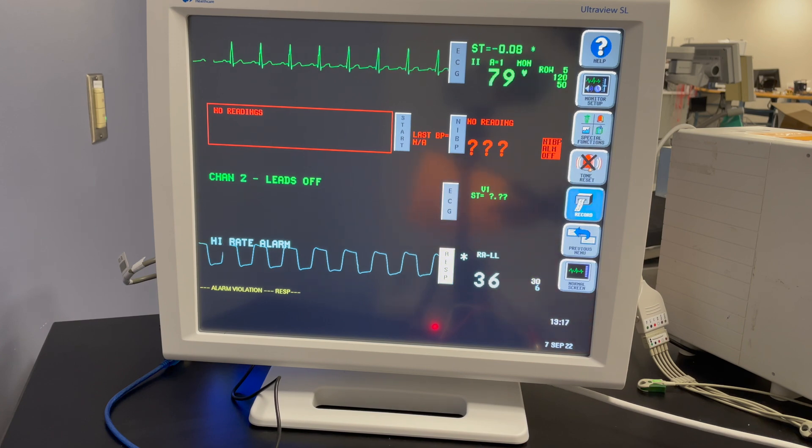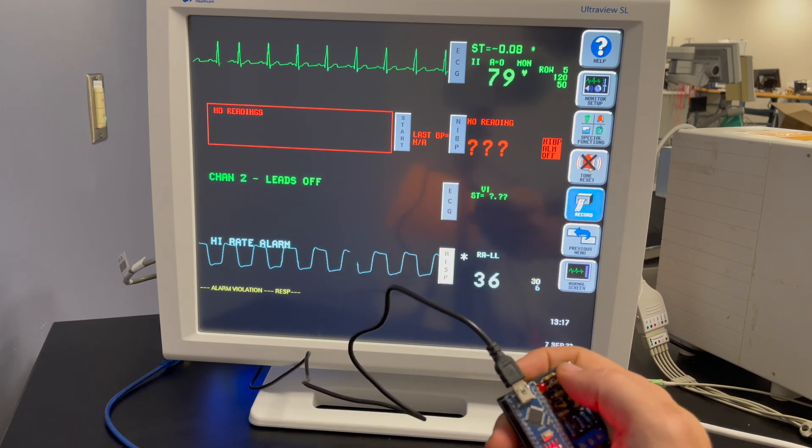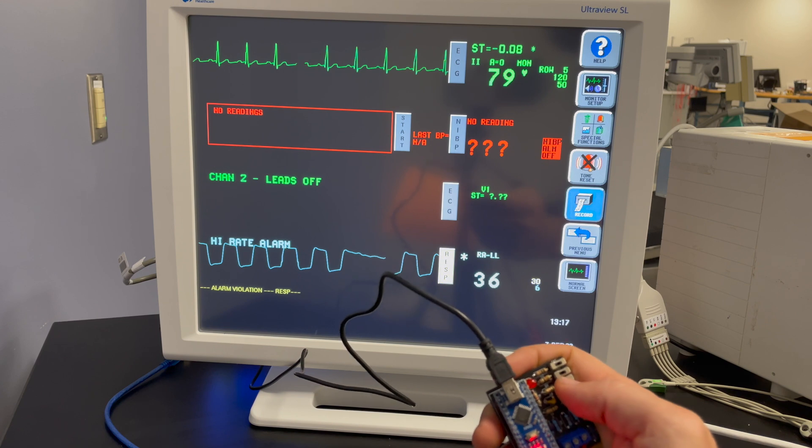Now if we wanted to go ahead and test the low rate alarm, the easiest way to do that is set your toggle switches to right, right, left.